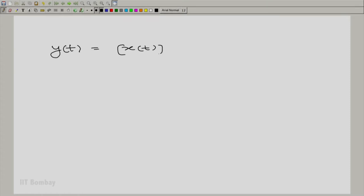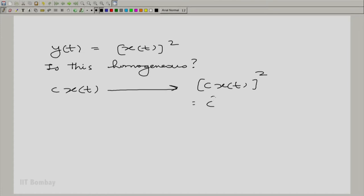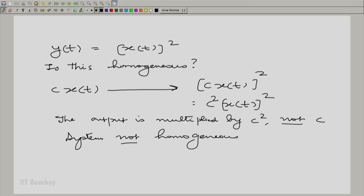Let us look at the first example that we took there. y(t) = x(t)². Is this homogeneous or does this obey homogeneity? Multiply x(t) by a constant c. If we input c times x(t) to the system, clearly the output is going to be cx(t) the whole squared, which is c² x(t)². Although the output is also being multiplied by a constant, that constant is not the same as the constant by which the input is being multiplied. The output is multiplied by c², not c. Therefore, the system is not homogeneous.